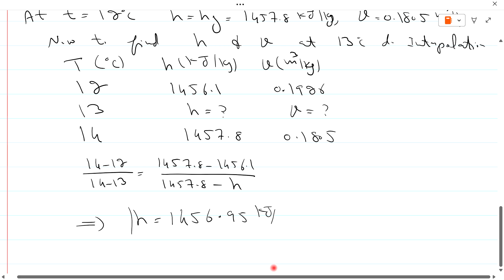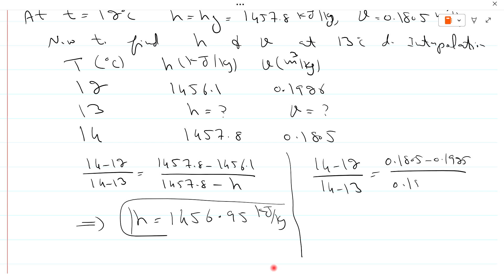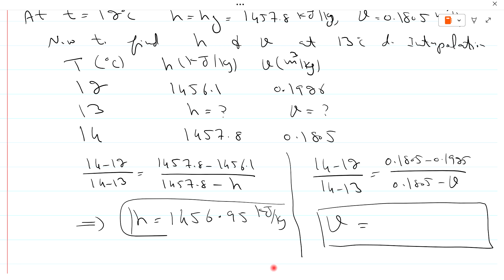Now interpolating for specific volume at 13°C: using the same interpolation method between 12°C and 14°C, the specific volume is 0.18655 m³/kg.